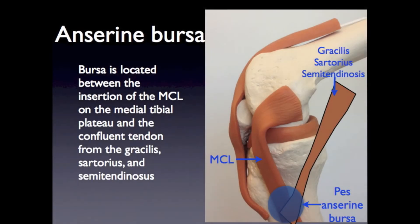The PES-anserine bursa is located between the insertion of the MCL on the medial tibia plateau and the confluent tendon from the gracilis, sartorius, and semitendinosus.